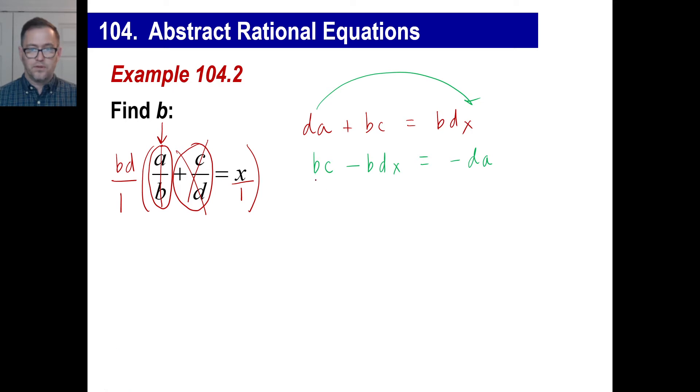What do we need to do to these two terms here? Pull the B out, right? The B goes away. If you pull the B out, you have a C left. Then you have minus what? D X, right? Okay. I'm assuming you said D X.